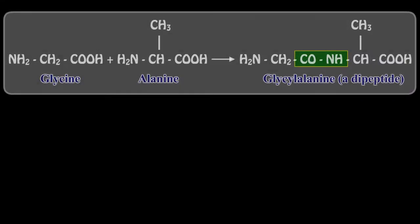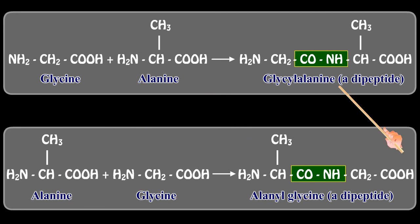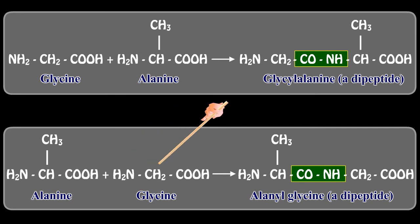In peptide formation, two different amino acid molecules may react in one of two ways. Observe the reaction: glycine and alanine join together to form glycylalanine, or alanine as the first amino acid molecule and glycine as the second can join to form alanylglycine.